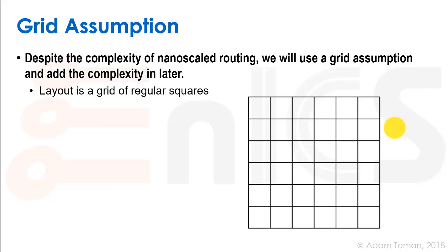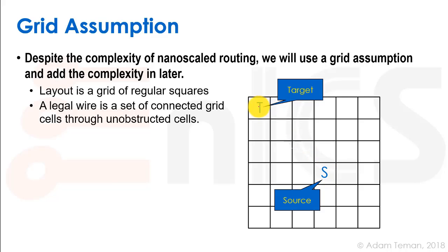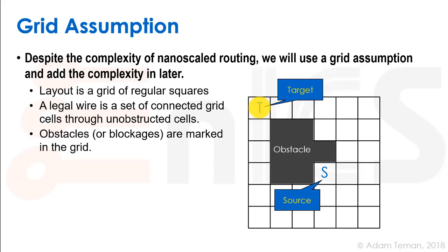We're going to assume that our whole chip is a grid of regular squares. A legal wire takes a source — the pin of a driver — and a target — the pin of the sink — and connects them. A legal wire has a continuous connection, a short circuit between the source and sink. There may be obstacles, which are places we cannot route through.